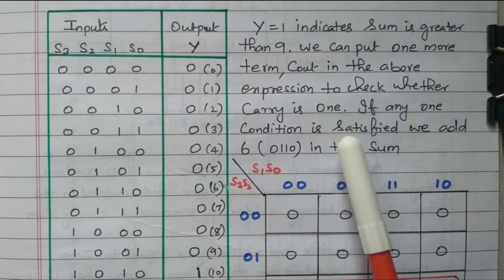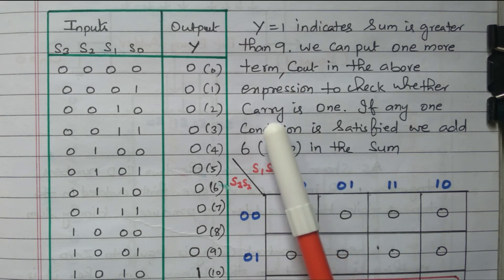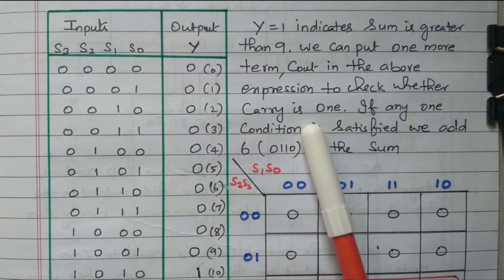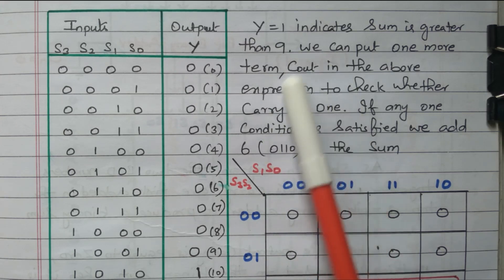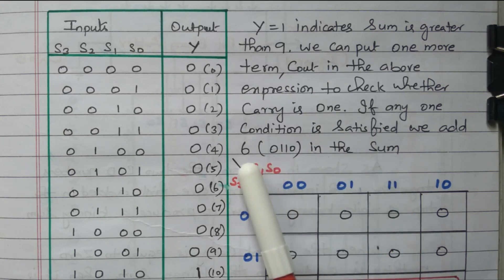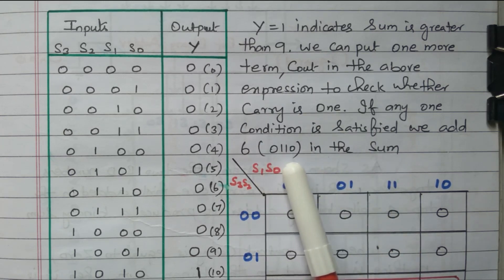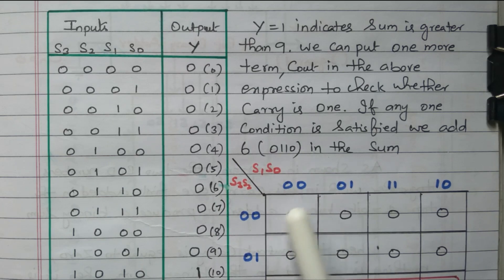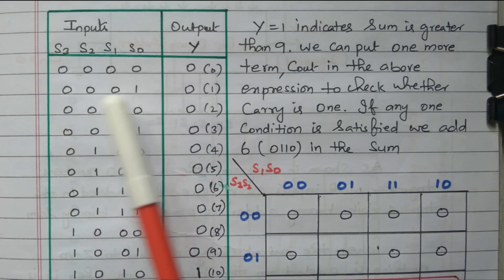And also, we need to take into account the carry. If the carry is generated also, we have to use the same process — we need to add six: 0, 1, 1, 0. Now, we will see this truth table.